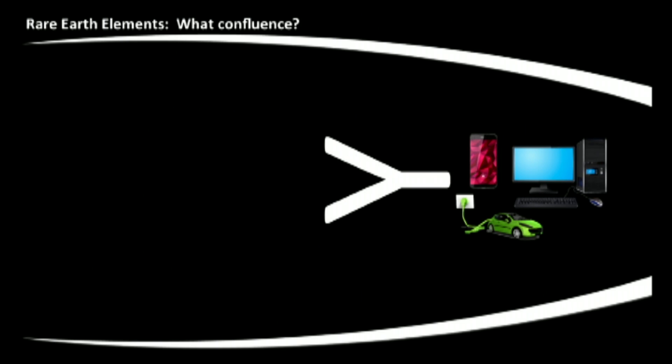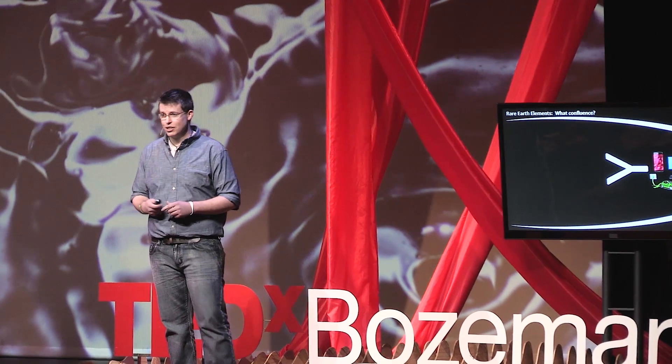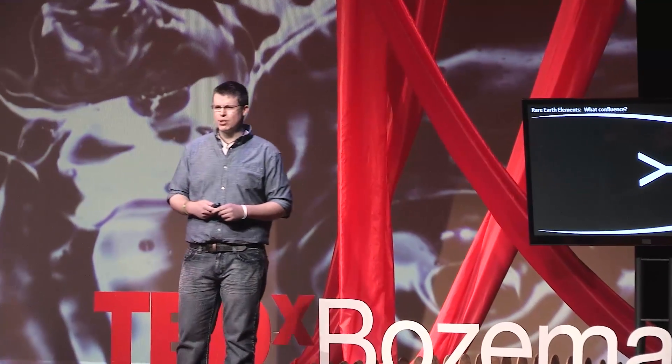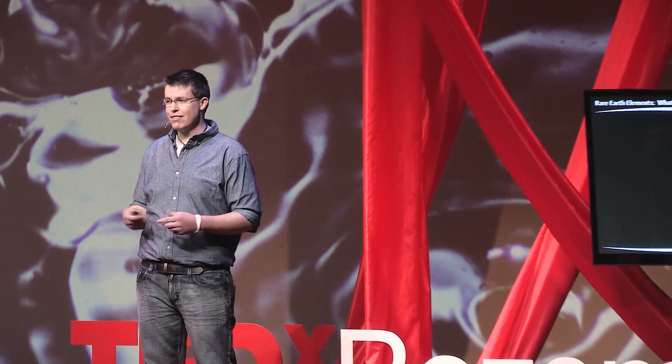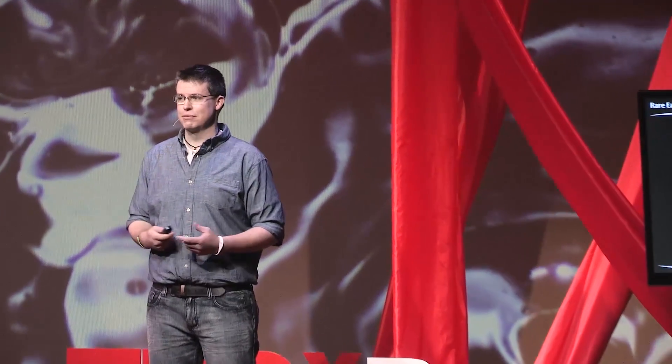What do we have at the confluence? We have our cell phones, our laptops, our computers, our hybrid cars, our defense systems — all dependent upon rare earth elements in some way, shape, or form.